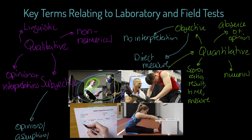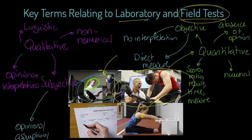Just to finish off, make sure you can differentiate between lab tests and field tests. Direct gas analysis is a lab test. The sit and reach test is a field test. The Wingate test sits somewhere in between — it's more of a lab test but can be done in the field too. In the field means you do it in your sporting session without going to a lab, unlike direct gas analysis. Hope that's useful.